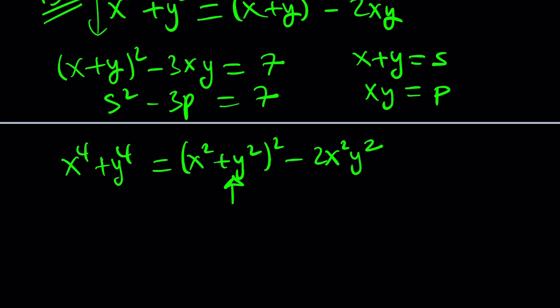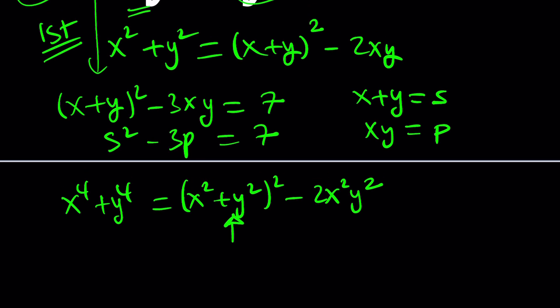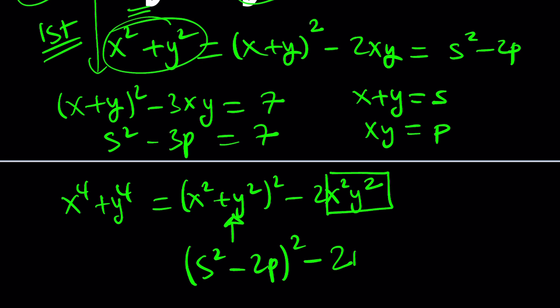And then, of course, we're not done yet, because we still have to take care of this. But guess what? This expression, x squared plus y squared, can also be replaced with this. By the way, we can actually do this. We can go ahead and erase this, maybe, and write this as s squared minus 2p. Okay, so this is equal to s squared minus 2p, and then you square that and minus 2. This is xy quantity squared, so it'll be 2p squared.